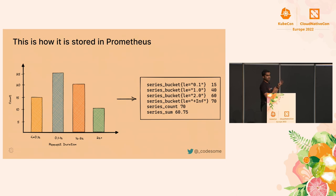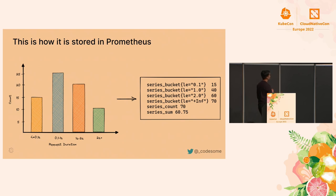For this histogram we have four bucket time series, each mentioning the bucket boundaries. The first time series at LE=0.1 includes the count of all requests with latency less than 0.1 seconds, which is 15. The next, LE=1 second, includes all requests before 1 second — the first and second bars. Similarly the third time series is the sum of the first, second, and third bars. There's a plus-infinity bucket representing the total count, plus two additional time series for the overall count and sum.